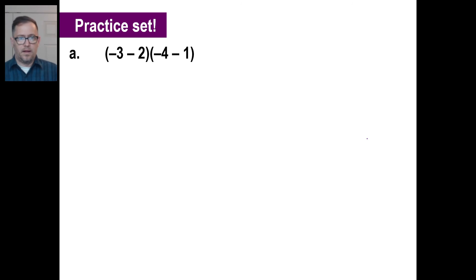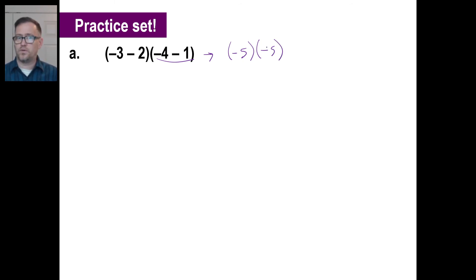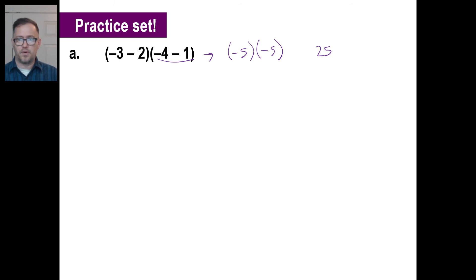Let's try the practice set. Go ahead and pause and try A. Negative 3 minus 2 is negative 5 — don't say 1 or negative 1. Negative 4 minus 1 is also negative 5. Make sure those are right; it's really critical. Negative 5 times negative 5 is positive 25 — a negative times a negative is a positive.